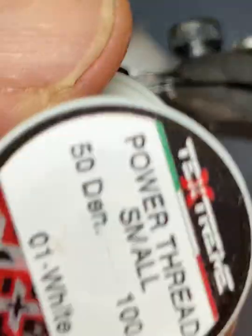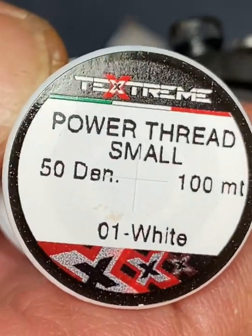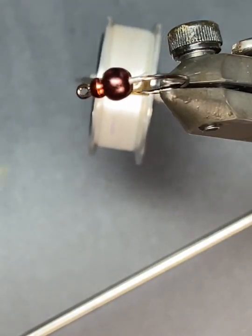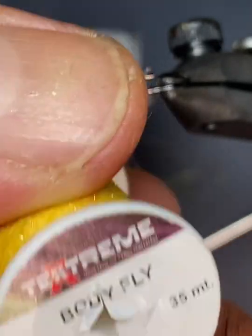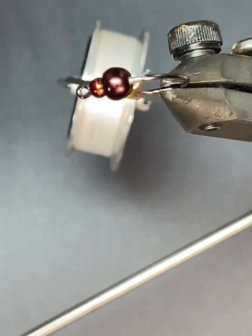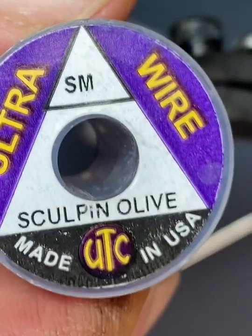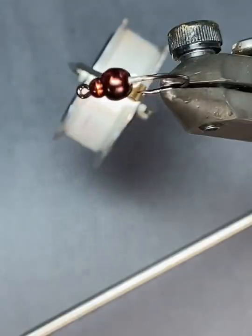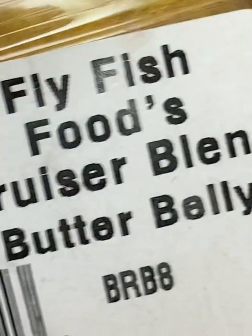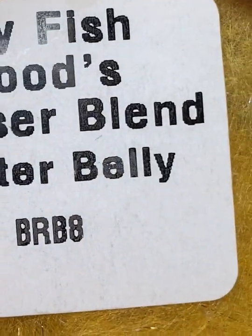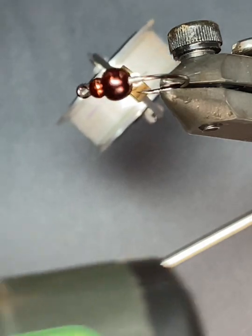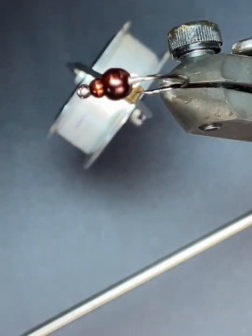I'm using TechStream Power Thread, the small size in white, and TechStream Bodyfly in yellow. Some Sculpin Olive Wire, small size. Dubbing is going to be Fly Fish Food Bruiser Blend Butterbelly. And a couple of resins: the Gulf Dirty Motor Oil and Gulf Thin Man.